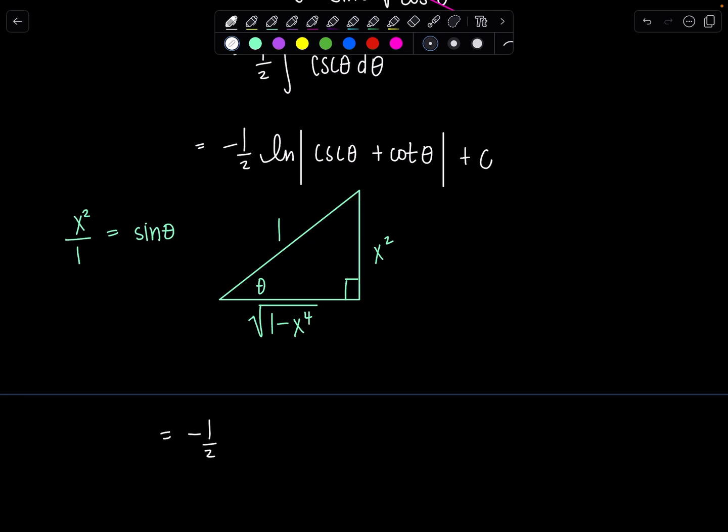Okay, beautiful. So this is negative 1 half natural log absolute value. Cosecant theta is ratio of hypotenuse over opposite. So that's going to be 1 over x squared, plus cotangent theta. Very good. That's going to be adjacent over opposite. So rad 1 minus x to the 4th over x squared plus c.